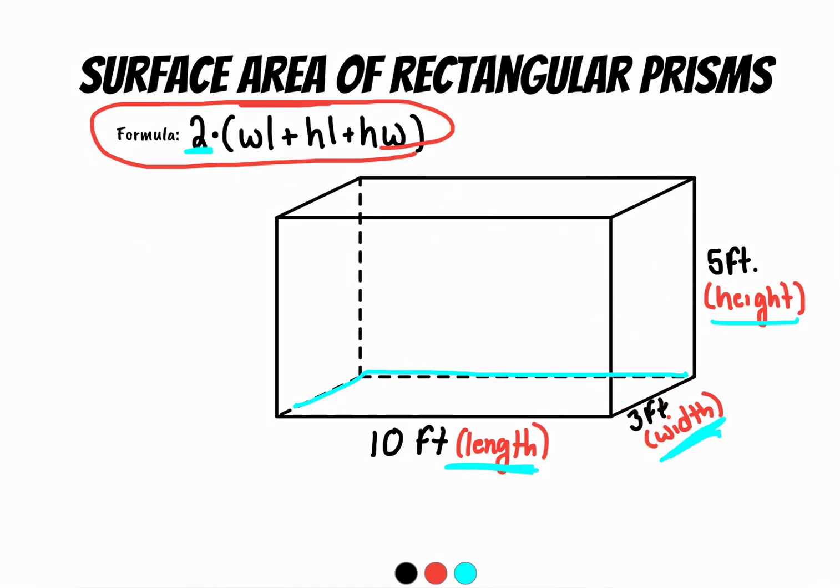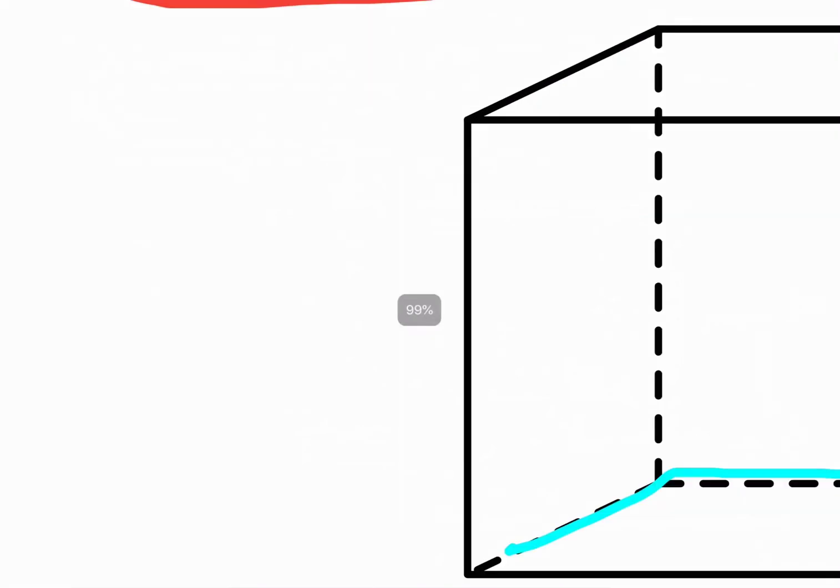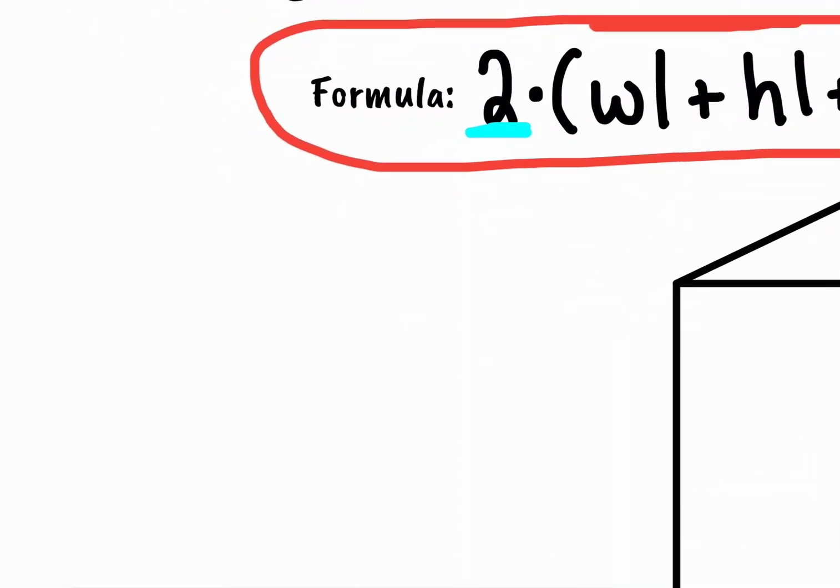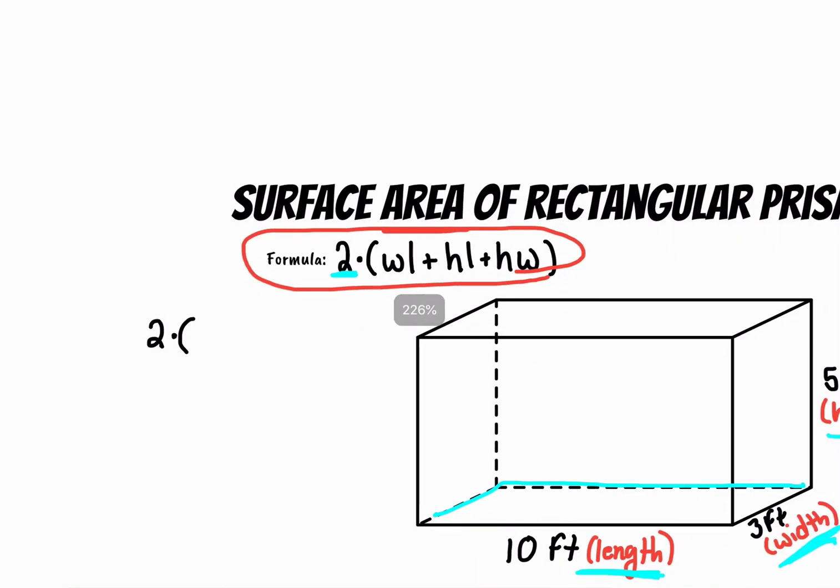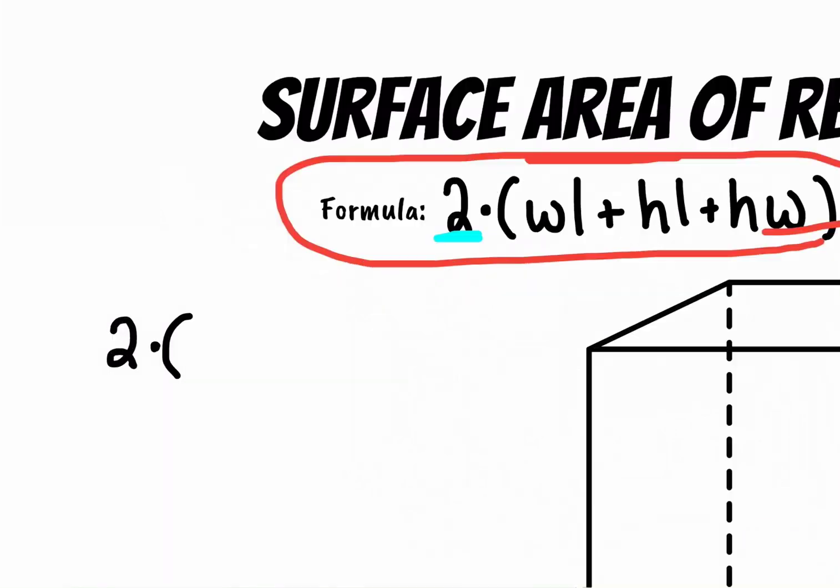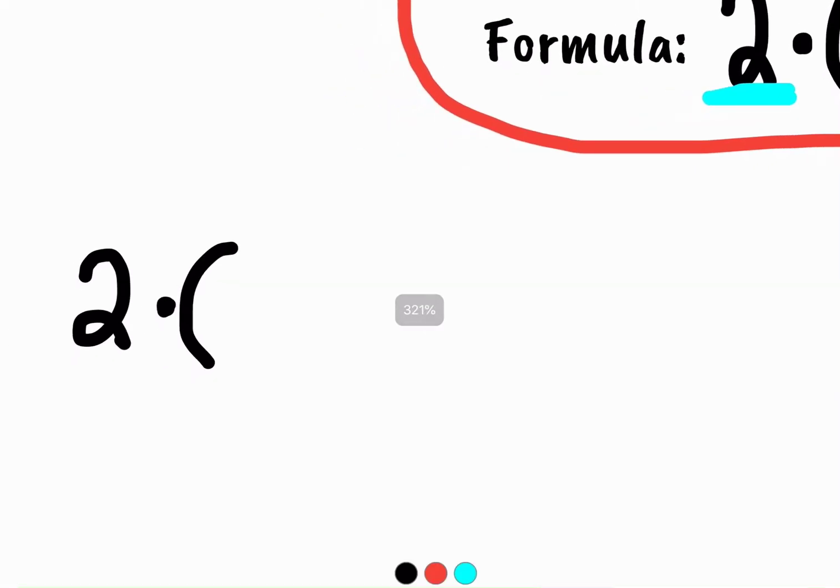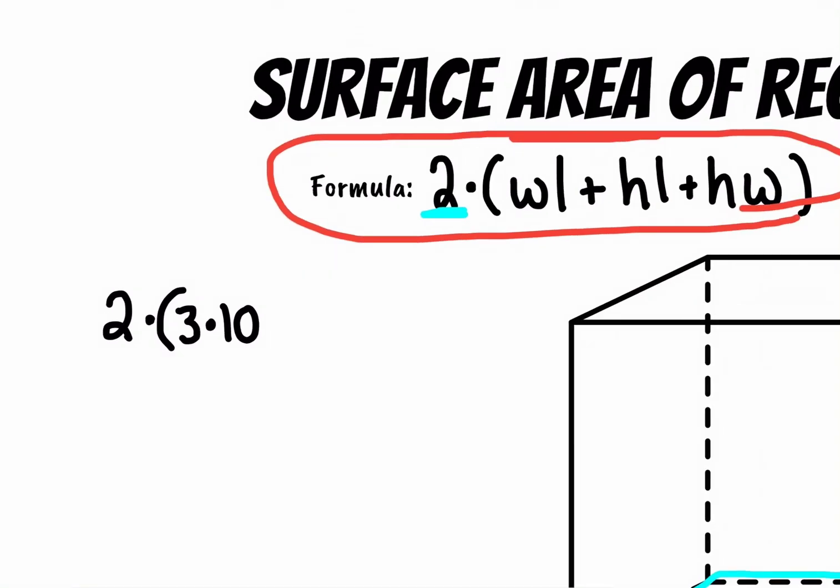So if we were to actually set it up, I'll start doing the formula over here. Two times the width of this shape, which is three feet, and the length of this shape is 10 feet. And then we go on to our next one.